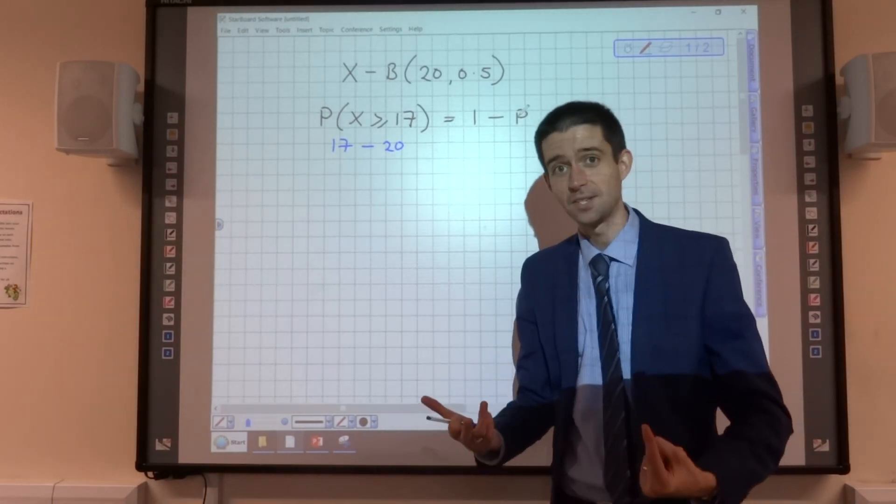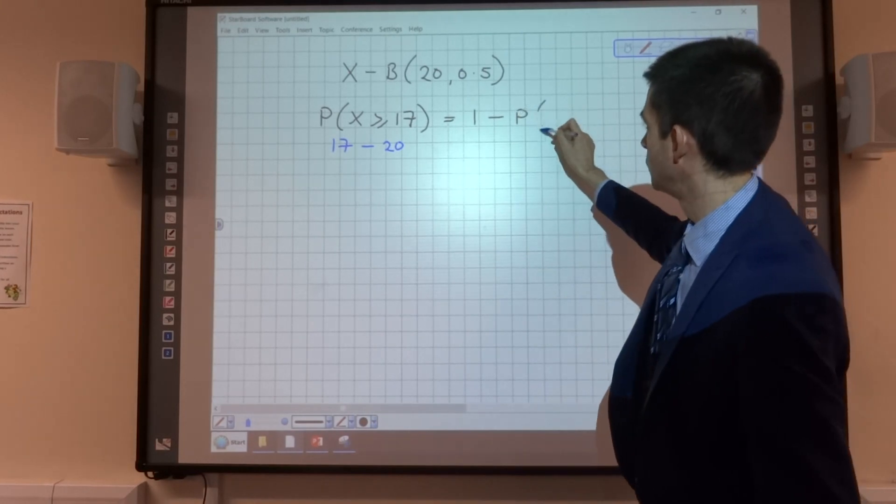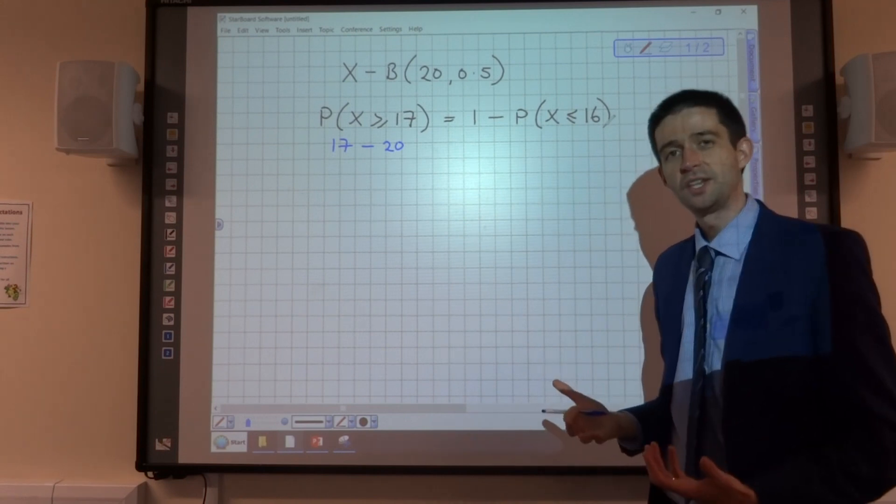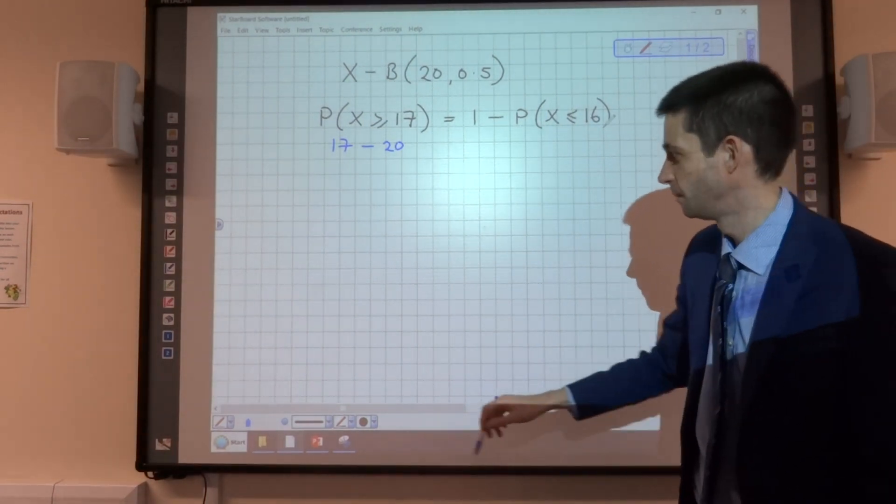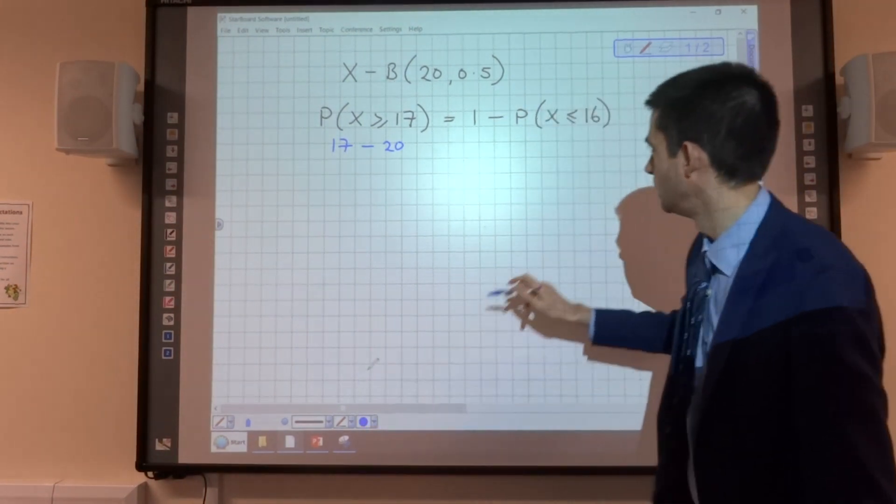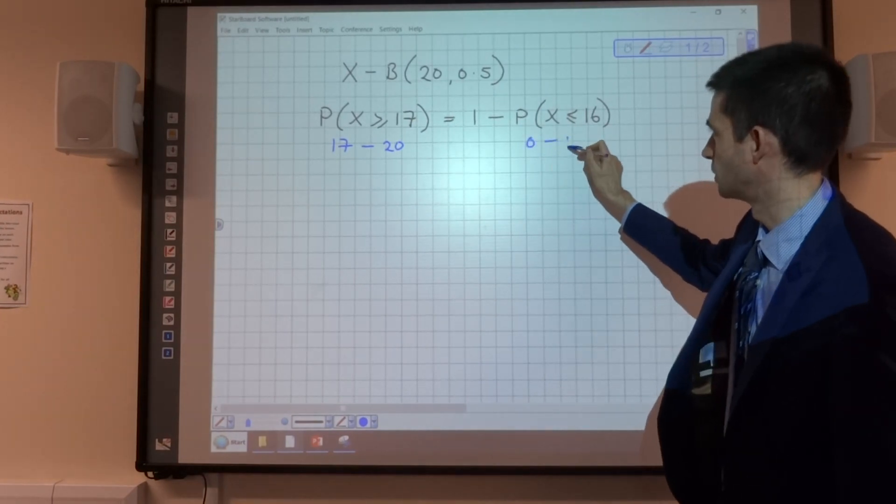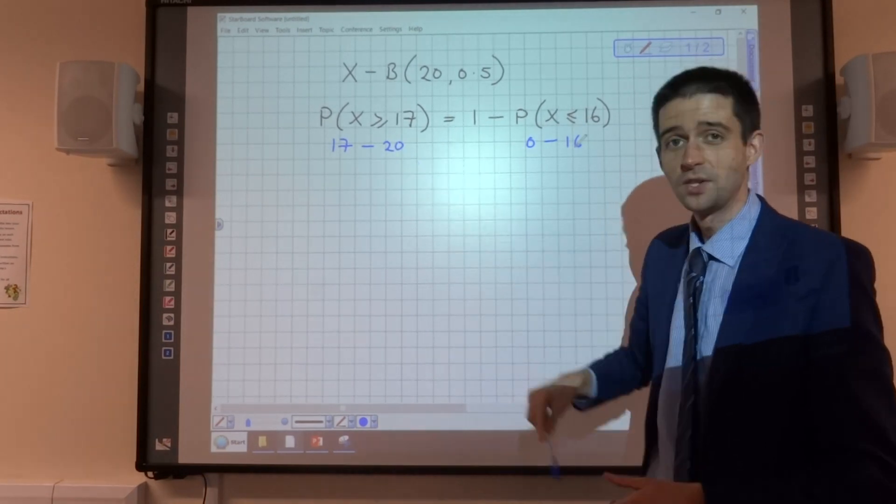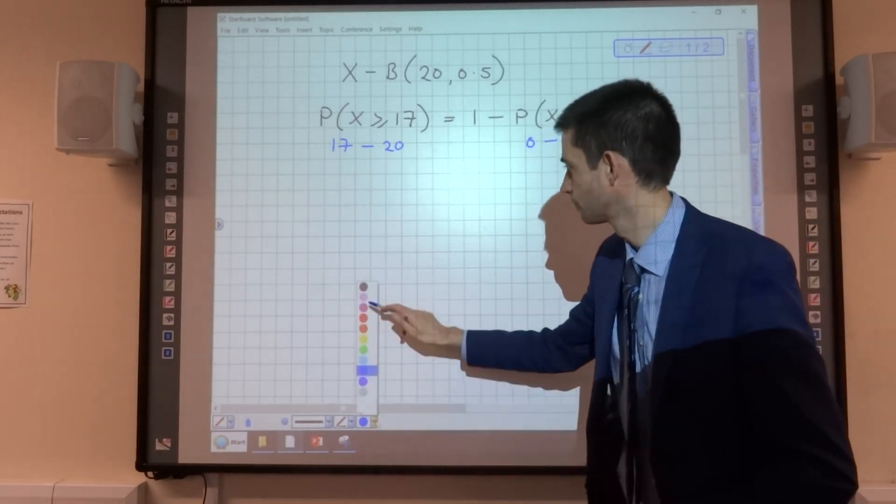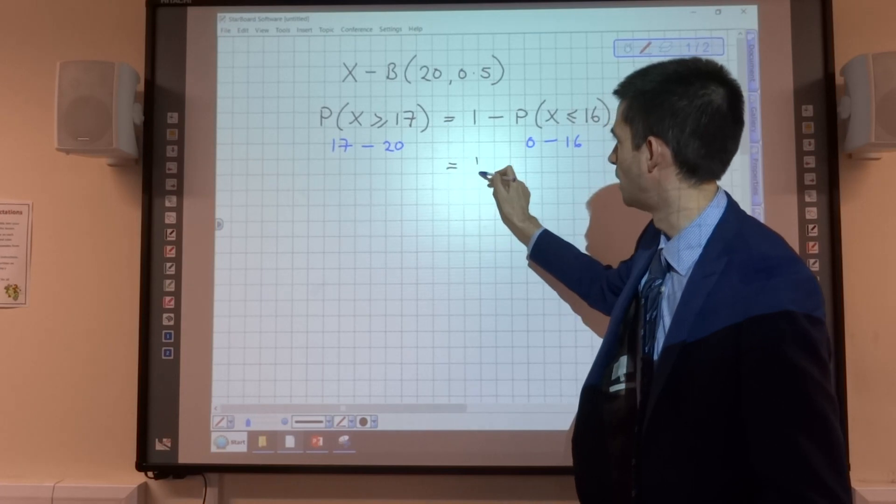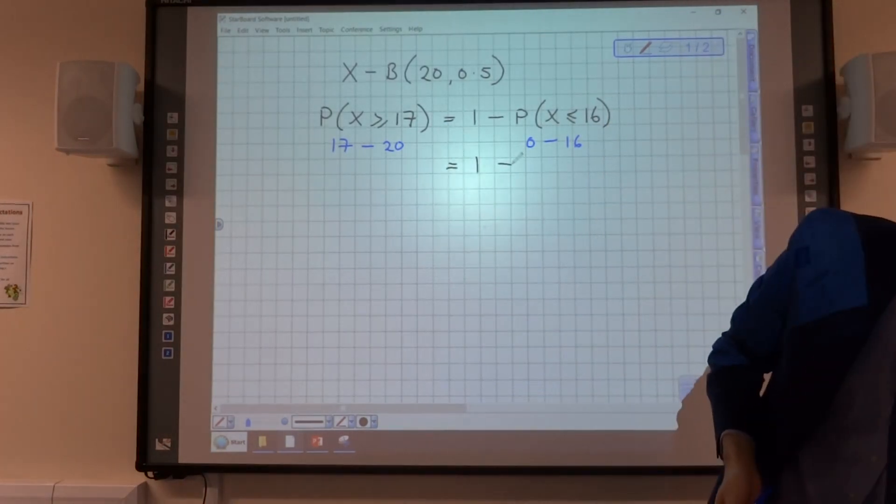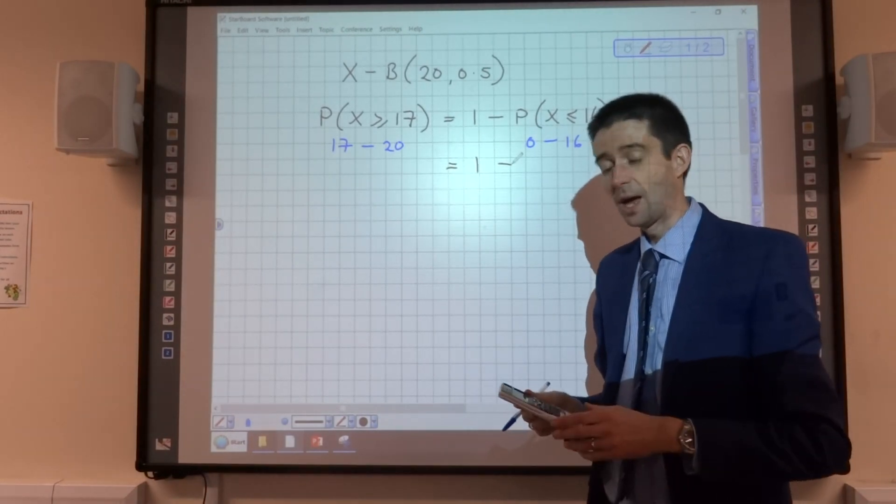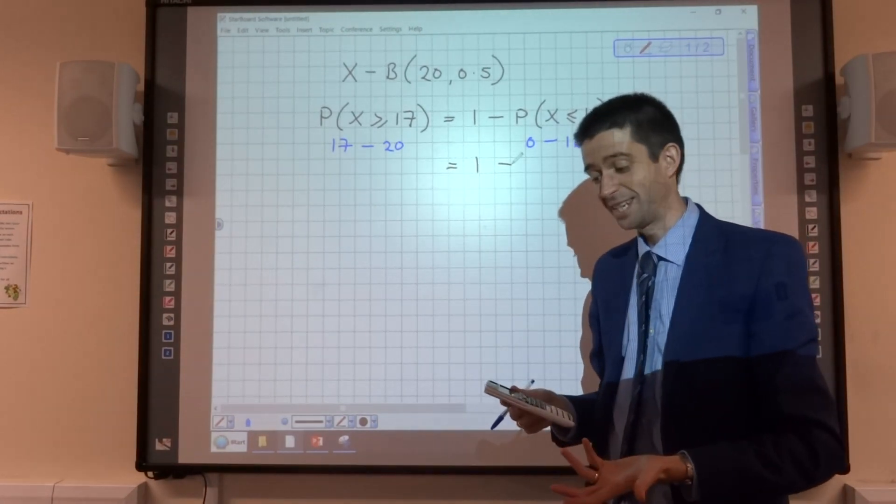So I need to work out what to omit. I'm going to omit the probability that X is less than or equal to 16. Because what that will do is exclude the results from 0 to 16, leaving me with the results from 17 to 20, which are the ones that I want. So 1 minus, using my Casio Classwise calculator, n is 20, p is 0.5, and the x value that I'm trying to work out is 16.